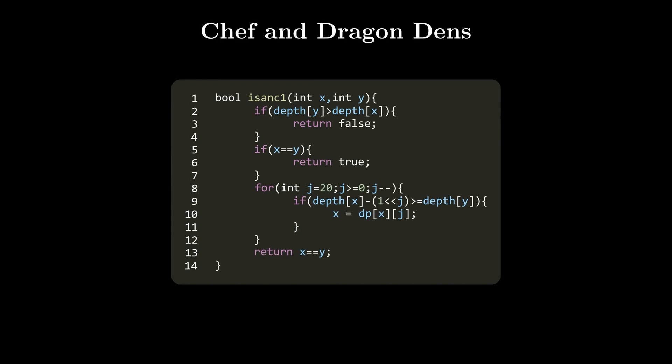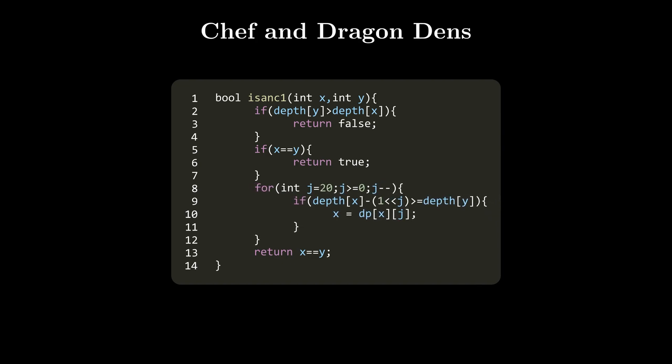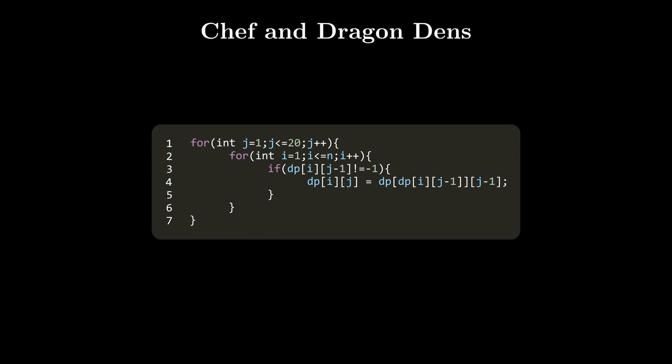For checking whether a node is an ancestor of another, if the target ancestor's depth is greater than our current node, it can't be an ancestor. If the nodes are the same, return true. Otherwise, we travel upwards from the lower node in decreasing powers of 2, where dp[i][j] points to the 2^j-th ancestor of node i. Binary lifting uses the relation 2^j = 2 × 2^(j-1). I'll include a binary lifting tutorial in the description.